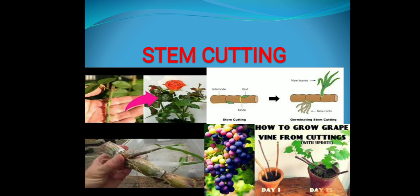There are some plants which grow without seeds — by different methods. Like the rose plant. How do you grow a rose plant? You cut a small piece of stem from the rose and bury it in the soil. After you water it, a new plant grows. There are nodes on the stem, and from those nodes leaves emerge and a new plant grows. This method is called stem cutting.